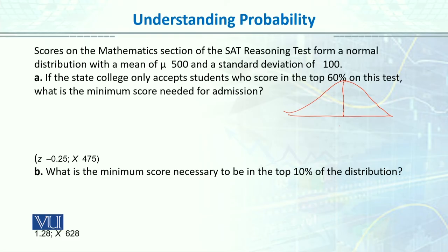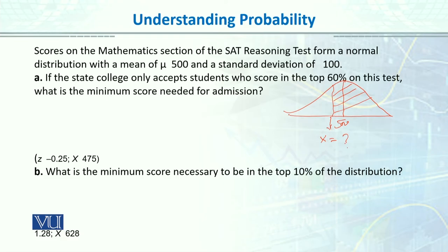If the state college only accepts students who score in the top 60% on this test, what is the minimum score needed for admission? We draw a normal curve. The distribution of SAT scores is normally distributed with mean 500 and standard deviation 100. The top 60% means 50% plus 10%, so that area is 0.5 and the remaining portion is 0.1. We go to the normal table, look up that area, and find the corresponding Z score.